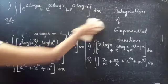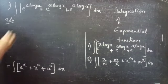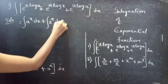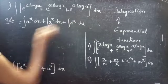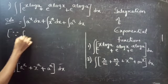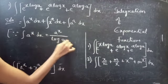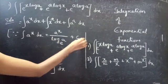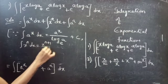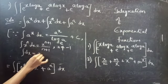Now you can write it as integral a^x dx plus integral x^a dx plus integral a^a dx. We know that integral a^x dx equals a^x divided by log a to the base e plus c, and integral x^n dx equals x^(n+1) divided by (n+1) for n not equal to minus 1, and integral dx equals x plus c.